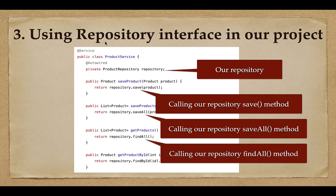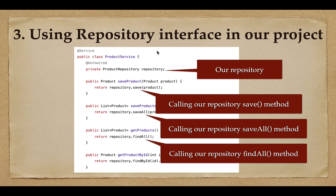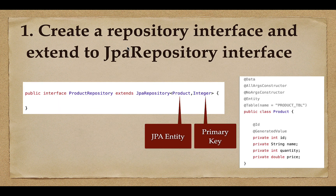To use the created repository interface in our project, we simply inject it using the @Autowired annotation. For example, we auto-wire ProductRepository and then call repository methods such as save, saveAll, findAll, and findById. You can inject a repository interface into service layer components, controller layer components, or JUnit test classes.